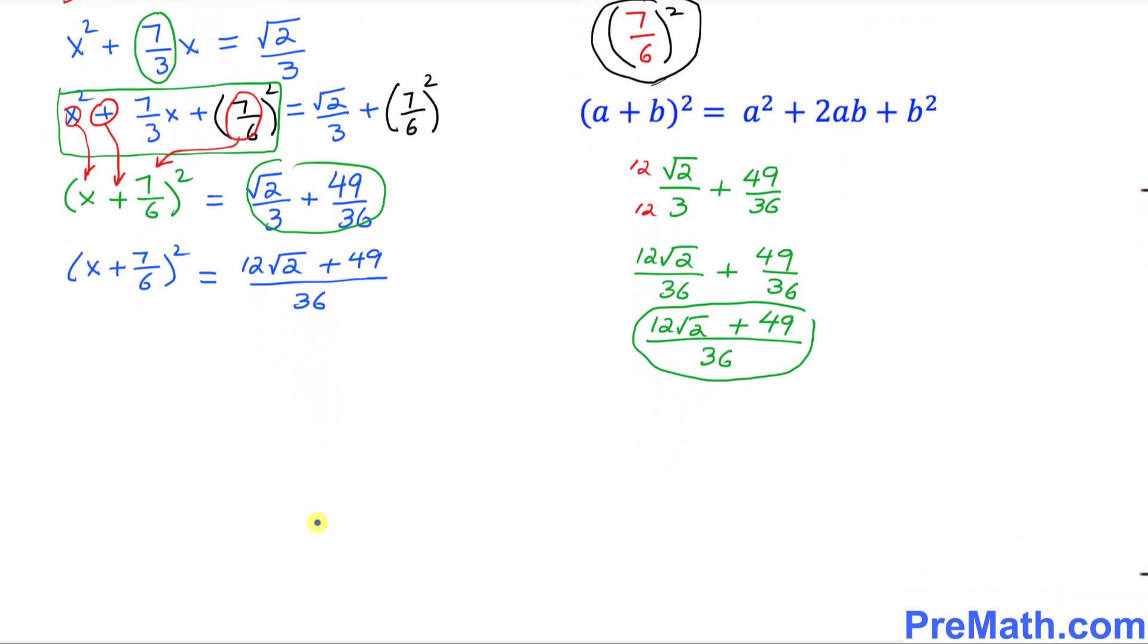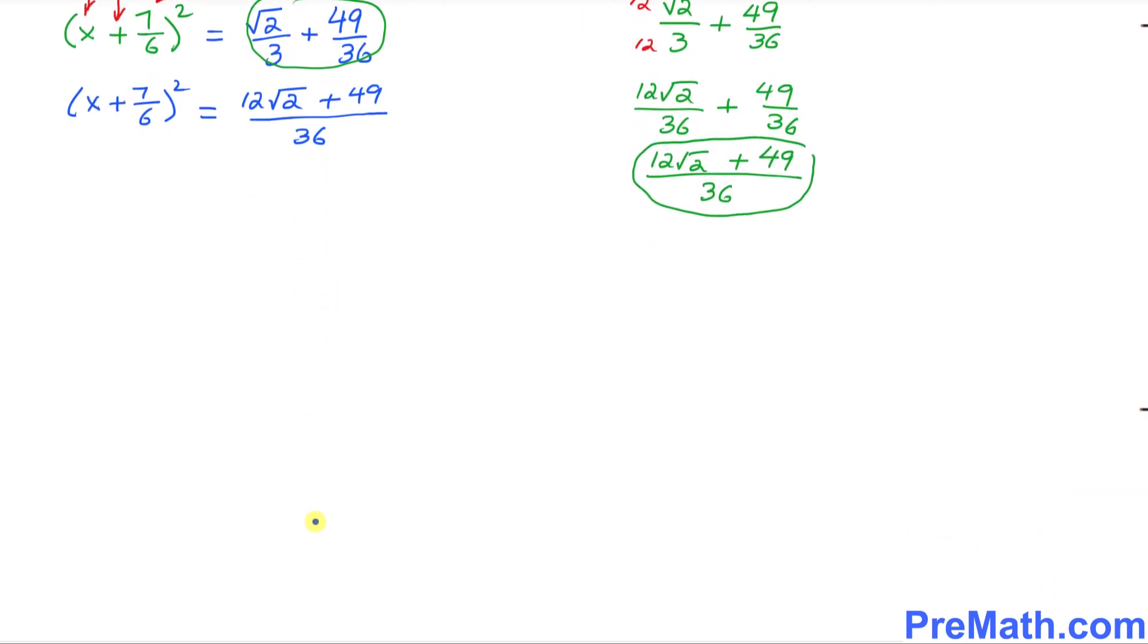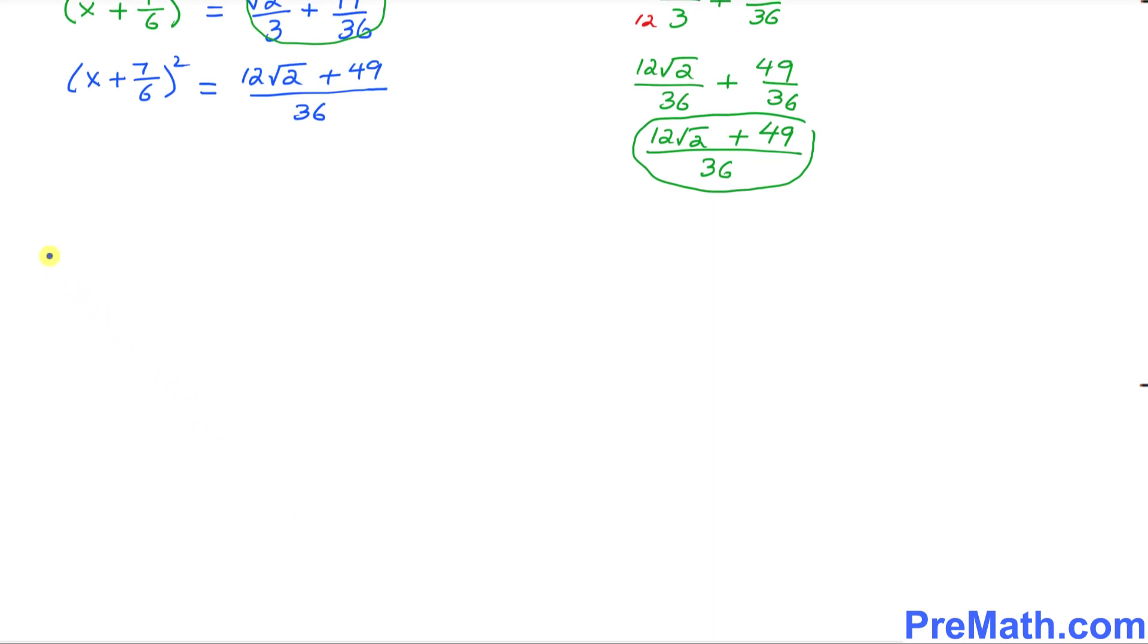So far so good. Let's move on to our next step. Now you can see that we have this square on the left-hand side. We want to undo this square. Let's take the square root on both sides.